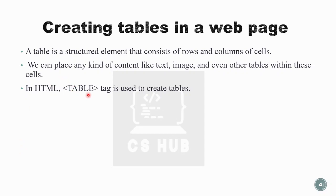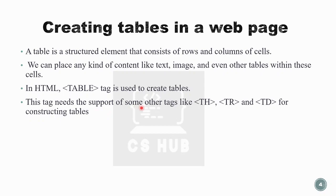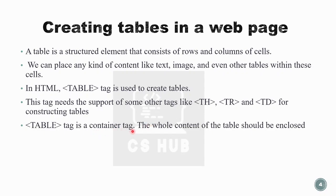In HTML, tags are case insensitive, so we can use capital letters, small letters, or mixed letters. The table tag is used to create tables, but it cannot stand alone — it needs support from other tags: th, tr, and td. The table tag creates just the outline, and to insert rows, columns, and cells we need those other tags. The table tag is a container tag; all content of the table should be enclosed within the opening and closing table tags.